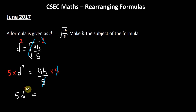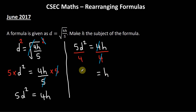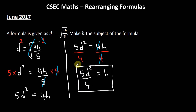Next, we're dividing by 5, so we'll multiply both sides by 5. The 5 cancels 5, leaving us with 5d² = 4h. Then we divide both sides by 4 to get rid of the 4, and 4 cancels 4. We're left with h = 5d²/4. This is our answer — we now have h on one side of the equal sign by itself.